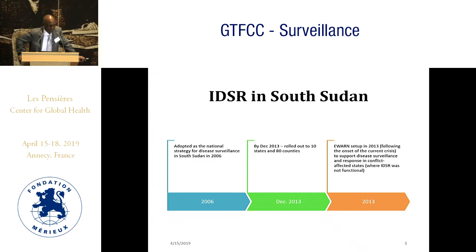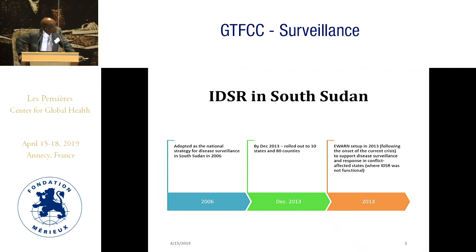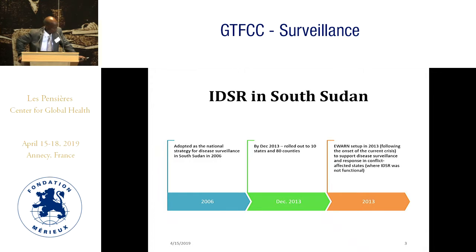In terms of how the country rolled out this strategy, we adopted it in 2006, but consistent implementation started around 2009 with support from USAID. By 2013, the strategy had been rolled out to all 10 states and 80 counties. Then in December 2013, the current conflict started, and EWARN was set up in areas where the national surveillance system was not functioning optimally.